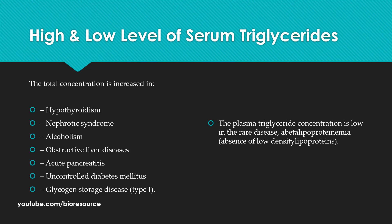The normal range for serum triglyceride is between 40 to 145 mg per deciliter. The level of serum triglyceride can be elevated or decreased due to various conditions. The concentration can be increased in conditions like hypothyroidism, nephrotic syndrome, alcoholism, obstructive liver disease, and others. The triglyceride concentration can also be reduced in certain rare disease conditions.